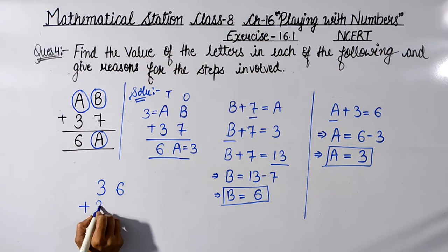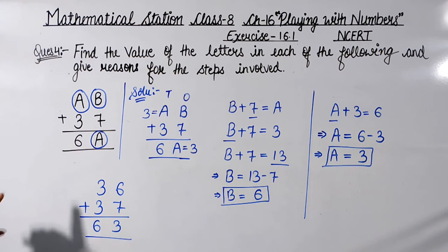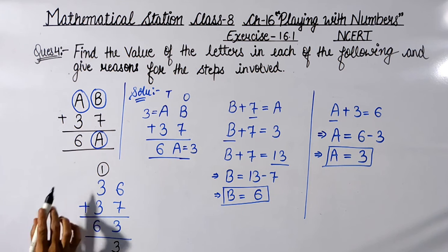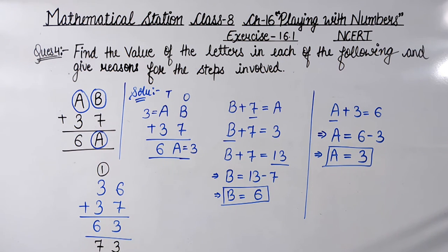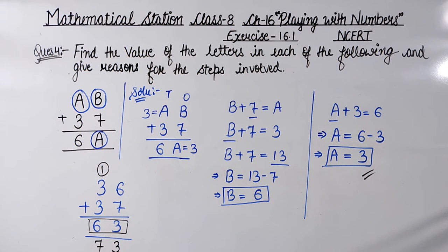Substituting A = 3 and B = 6: 36 + 37. Ones column: 6 + 7 = 13, write 3 and carry 1. Tens column: 3 + 3 = 6, plus carry 1 = 7. So the answer is 73. But the expected answer is 63 — our answer does not match, so A = 3 is incorrect.